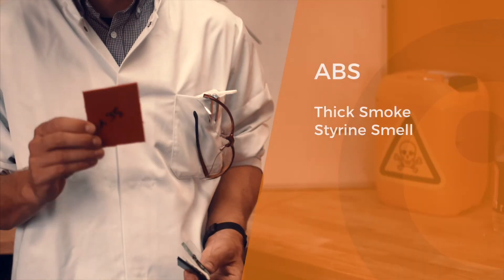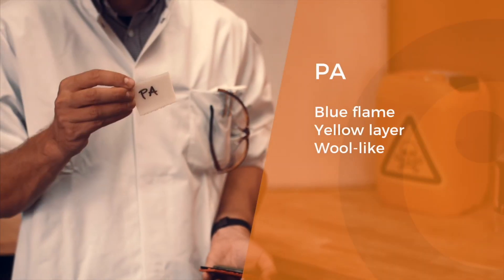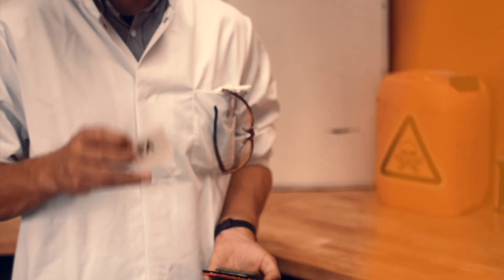ABS's flames will also result in a thicker smoke and soot. PA generates a blue flame with a layer of yellow similar to burned horn or wool.